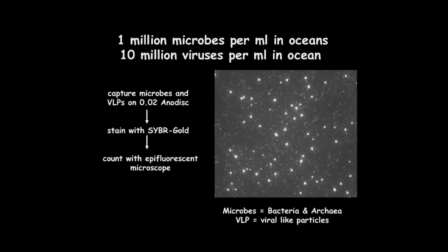There's about a million bacteria per milliliter in the world's oceans and about 10 million viruses. For the most part, the viruses are called phage — they infect the bacteria. And they're one of the main controls on the types and number of bacteria that we have.